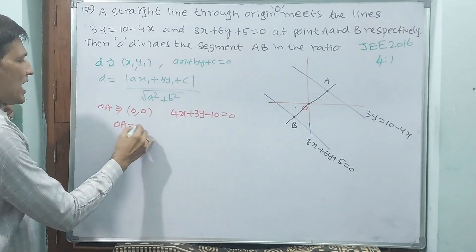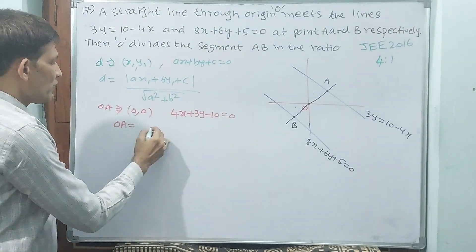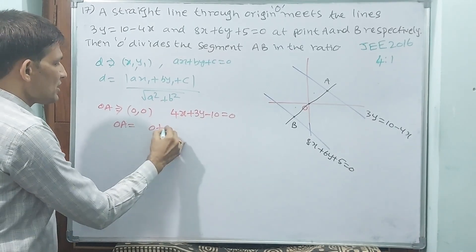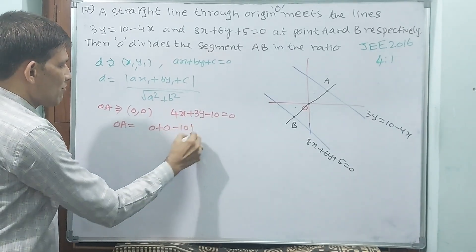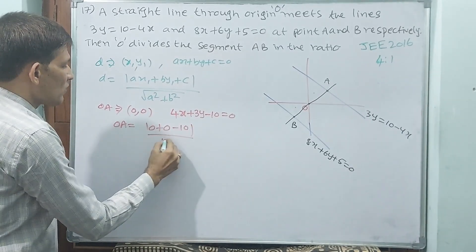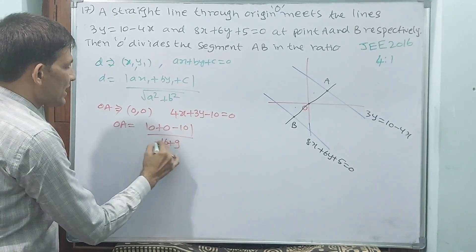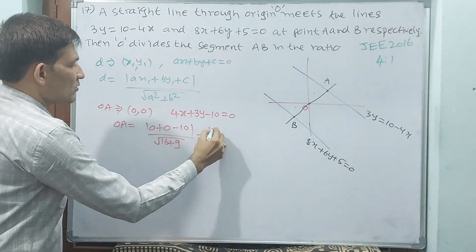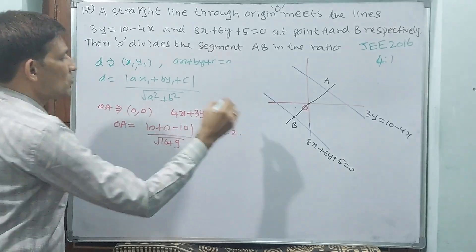OA = |0×4 + 0×3 - 10| / √(4² + 3²) = |-10| / √(16 + 9) = 10 / √25 = 10 / 5 = 2.